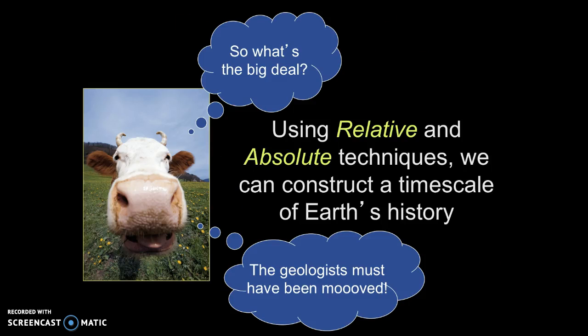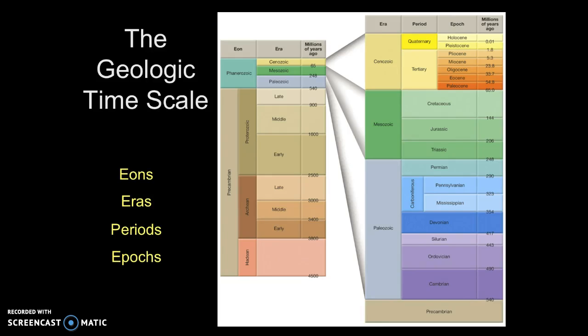So what's the big deal? When we're using relative and absolute age-dating techniques, we can construct a timescale of the Earth's history. Here we're looking at one view of the geologic timescale. The history of the Earth is divided into many different time divisions. The longest time divisions are the eons. We then subdivide those into eras and then those into periods and epochs.